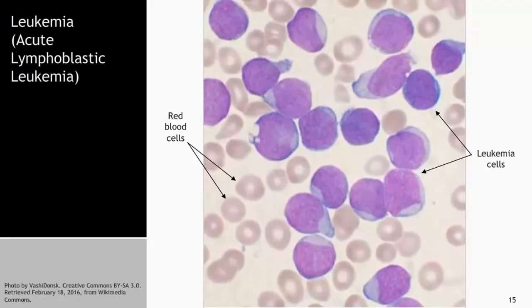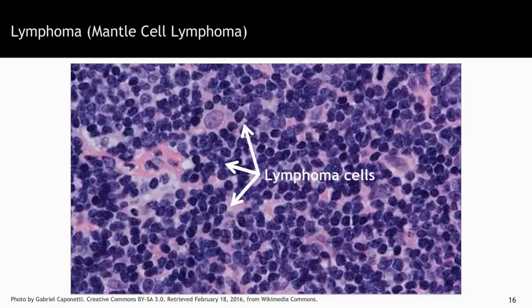Here is leukemia, which again starts in the bone marrow and circulates into the blood. This is an example of acute lymphoblastic leukemia. The red blood cells that carry your oxygen are the small donuts you see in the background, carrying iron and oxygen to oxygenate your blood. The leukemia cells are just a proliferation of what we call blasts — an overgrowth of cells with big nuclei and big cytoplasm. This is what acute lymphoblastic leukemia looks like.